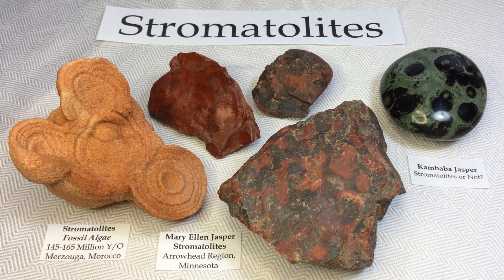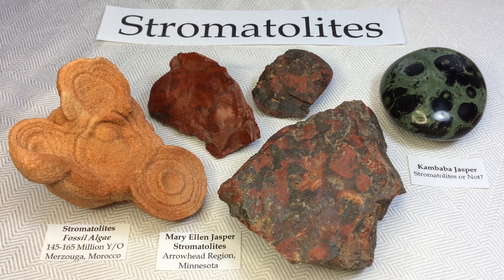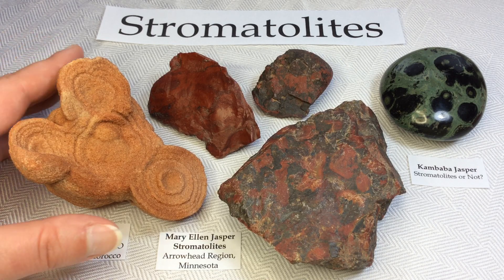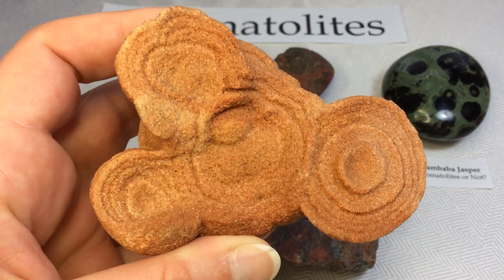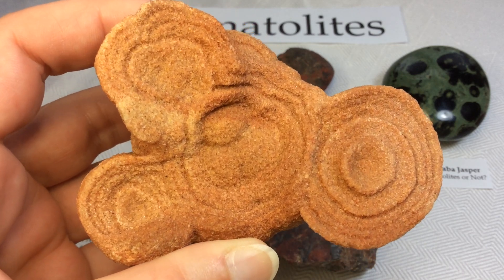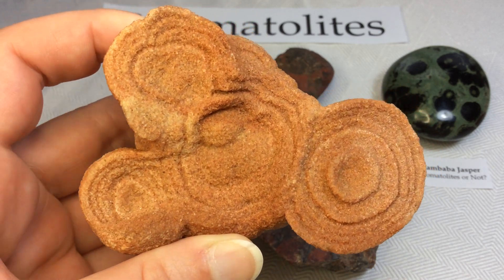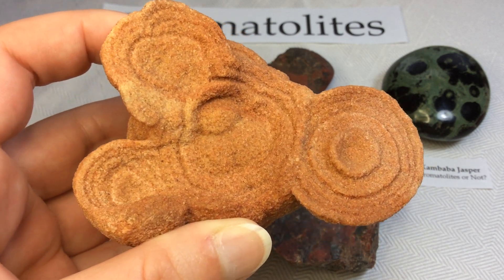The first specimen I'm going to start showing you is this beauty right here. Labeled 'stromatolites fossil algae,' roughly 145 to 165 million years old. This particular specimen is from Merzouga, Morocco. I purchased it from one of my very favorite mineral sellers, Novira Minerals, also known as Pretty Rocks Cheap on Etsy. Absolutely love every specimen I receive from them.